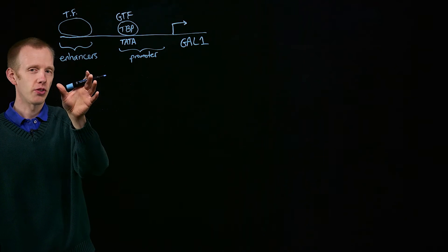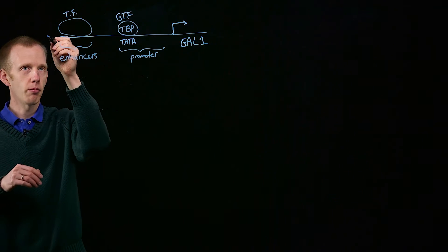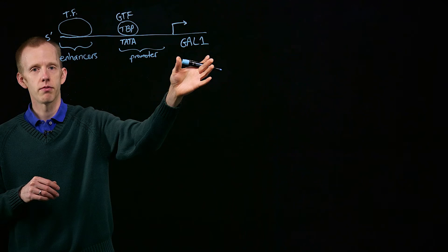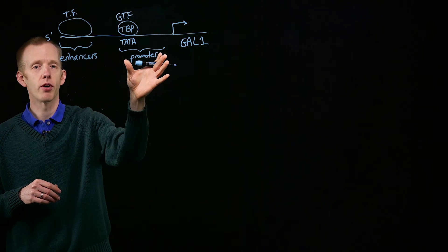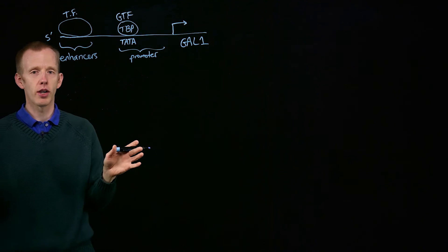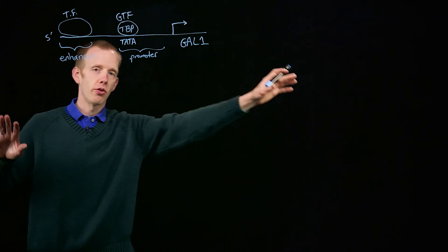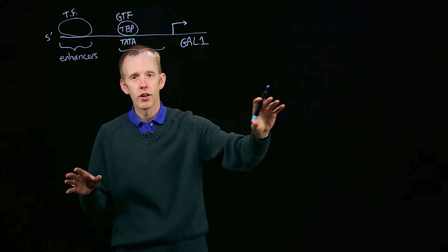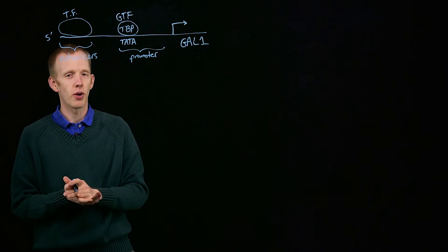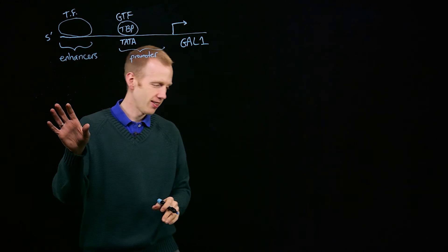The enhancers are interesting. The promoter is almost always just upstream of the transcription start site, usually very close to it. Enhancers, on the other hand, can be located pretty much anywhere: upstream of the gene, downstream of the gene, in an intron. It's really quite difficult to locate exactly where enhancers exist in the DNA.